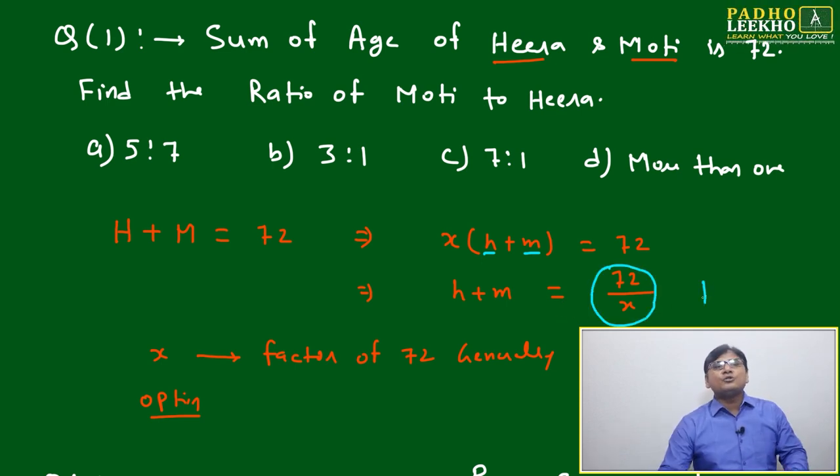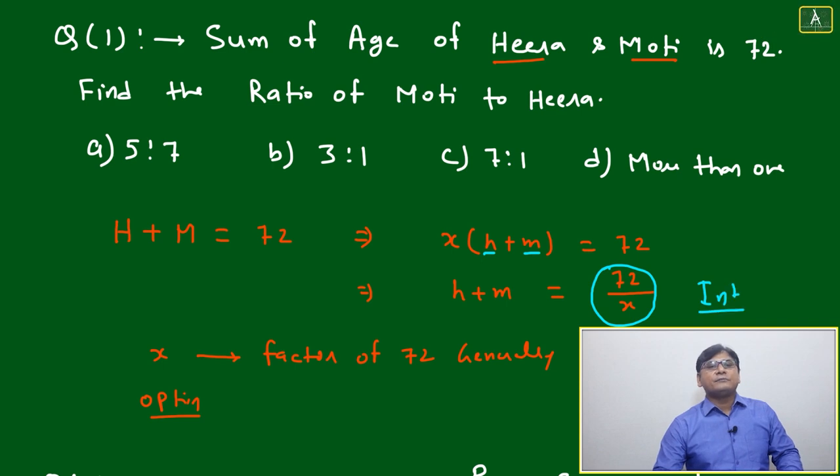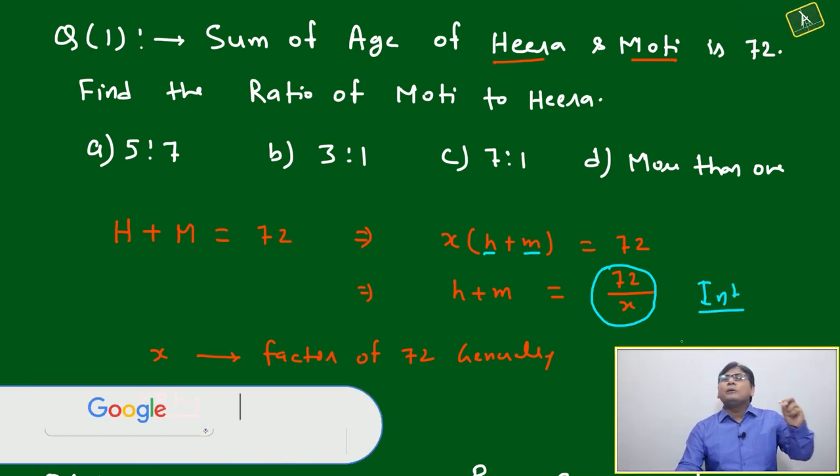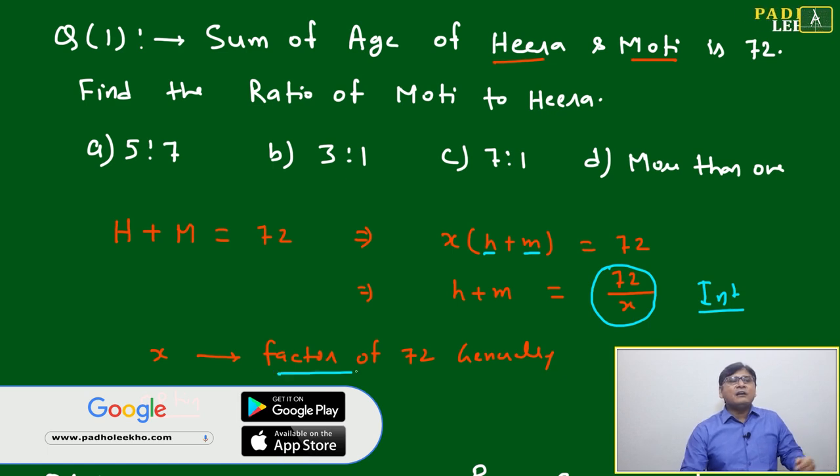Generally, we deal with these questions related to integers. If it's an integer, then 72/X should be an integer. When will it be an integer? When X is a factor of 72.